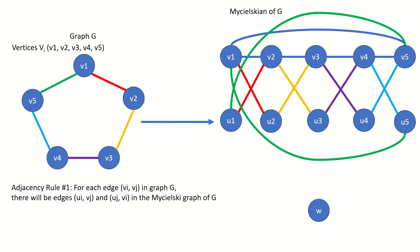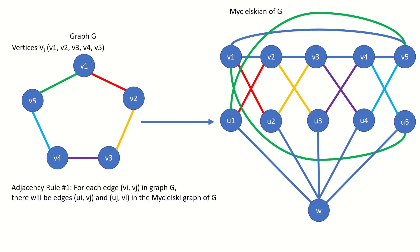The final step in determining the connections in a Mycielsky graph of G is to connect the vertex w to all of the u vertices. This is the Mycielsky graph of the graph on the left. Notice that there are no edges between the u vertices.